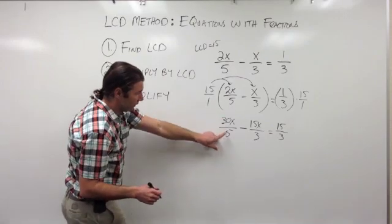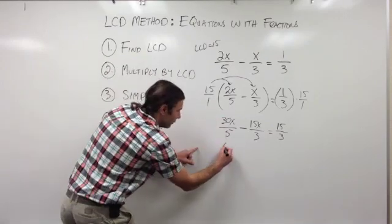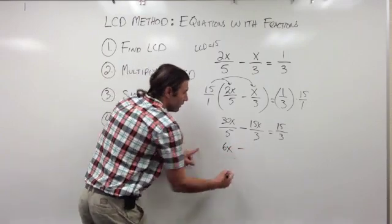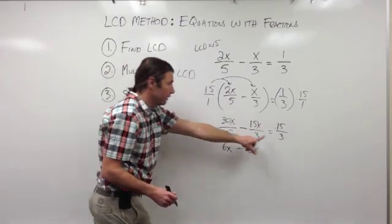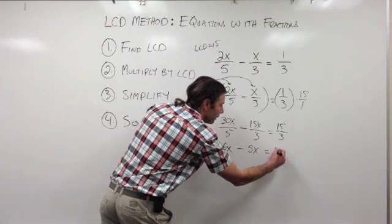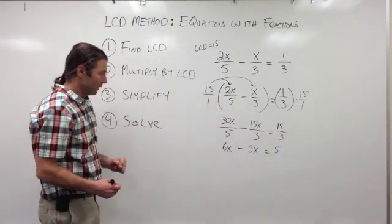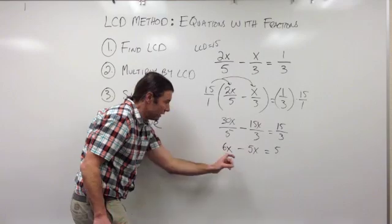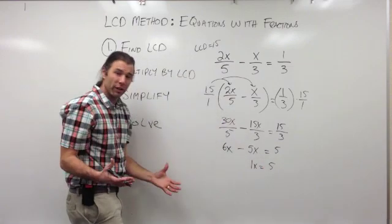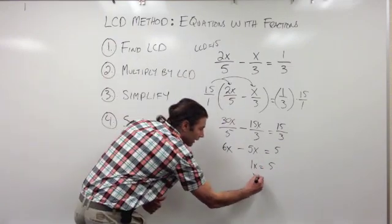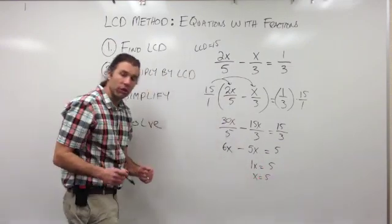So let's see. 30x divided by 5 is going to give us 6x. 15x divided by 3 is going to give us 5x. And then finally, 15 divided by 3 is going to give us 5. Now we can simplify the left side. 6x minus 5x is going to leave us with 1x, and we have 5 on the right side, so we get our answer of x is equal to 5.